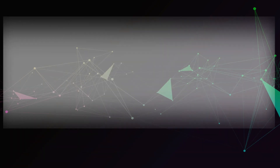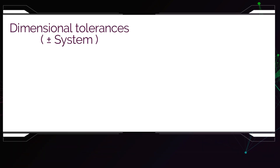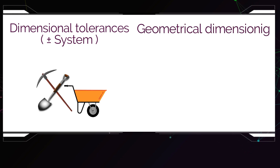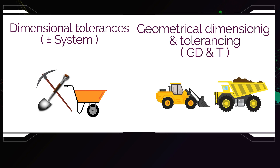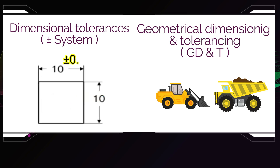If you designed using only the plus-minus tolerances nowadays, it's like going to a construction site with only an axe. But using GD&T is like going to a construction site with modern construction machinery and equipment. Because the way they had to use the plus-minus tolerances in the past to still achieve the function is by making these tolerances narrow — so instead of using 10 plus-minus 0.1, you had to use 10 plus-minus 0.01. Narrowing the tolerance zone means more cost.